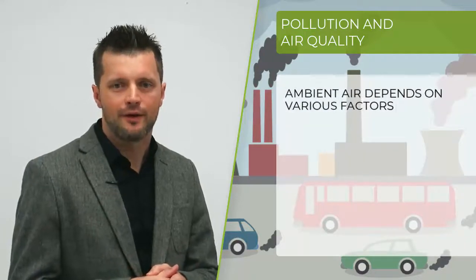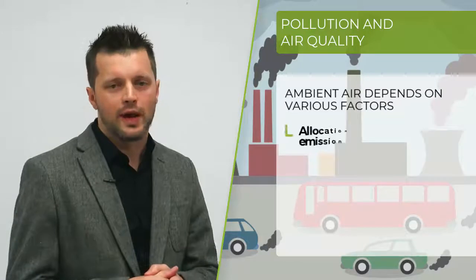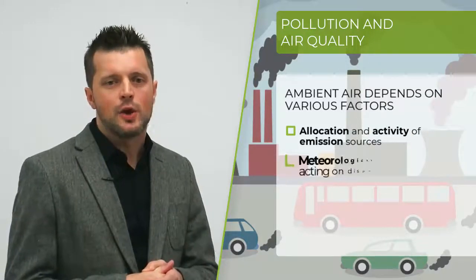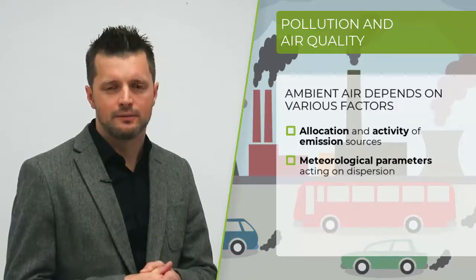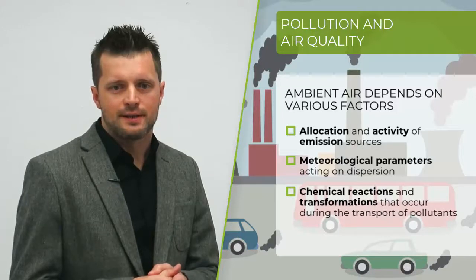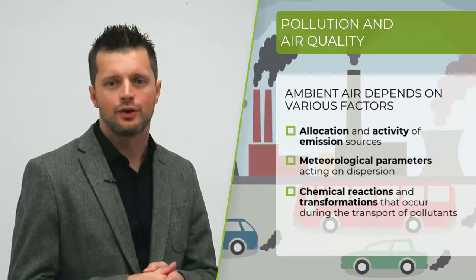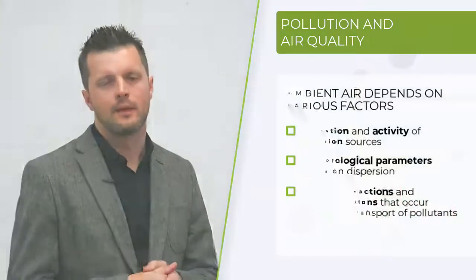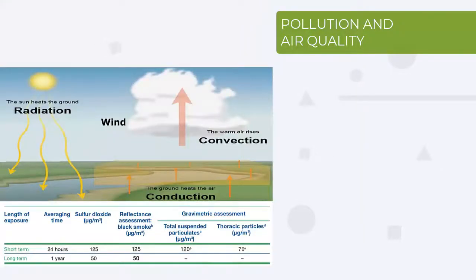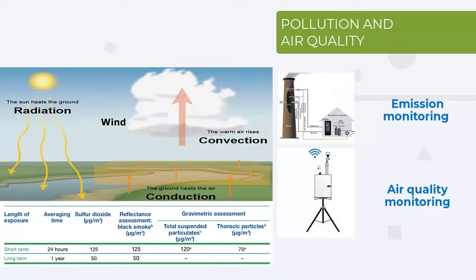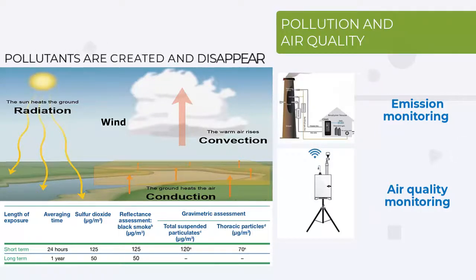Such variation depends on different factors such as the allocation and activity of emission sources, meteorological parameters acting on the dispersion, and chemical reactions and transformations that occur during the transport of pollutants. Therefore, it is very important to simultaneously monitor both air emission and air quality. It is also important to understand the complex transmission processes, as many secondary pollutants such as sulfates, nitrates and ozone appear and disappear in the atmosphere through deposition and chemical reactions.